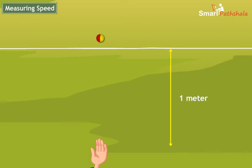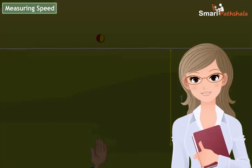Note the time at the moment the ball crosses the line. Now calculate the speed of the ball by dividing the distance travelled by the time taken.